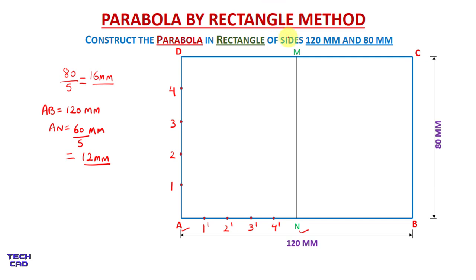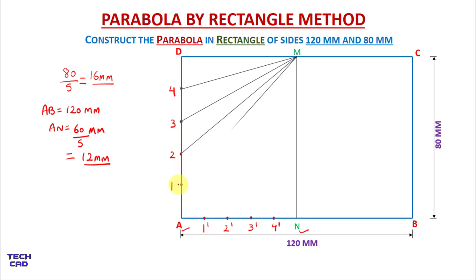Now from point M I will make lines towards the equal divisions of the vertical line. I will join M to 4, then join to 3, then join to 2, then join to 1. From line AN divisions I will take vertical lines — from 1 dash I will take a line up to point 1 only.